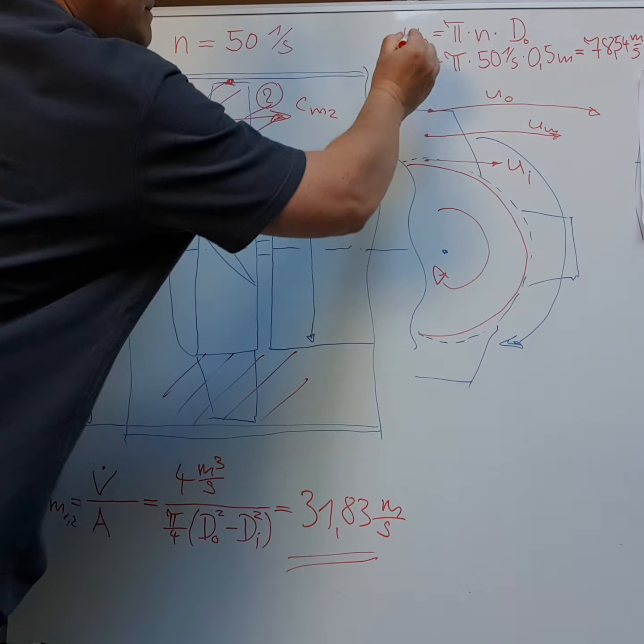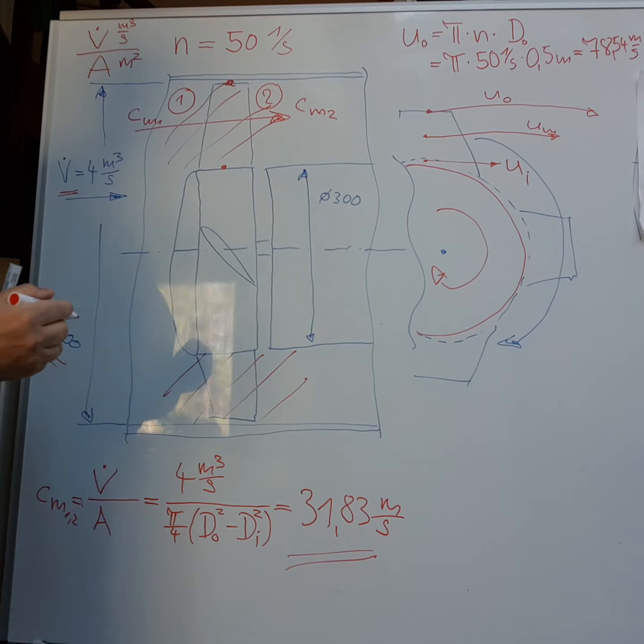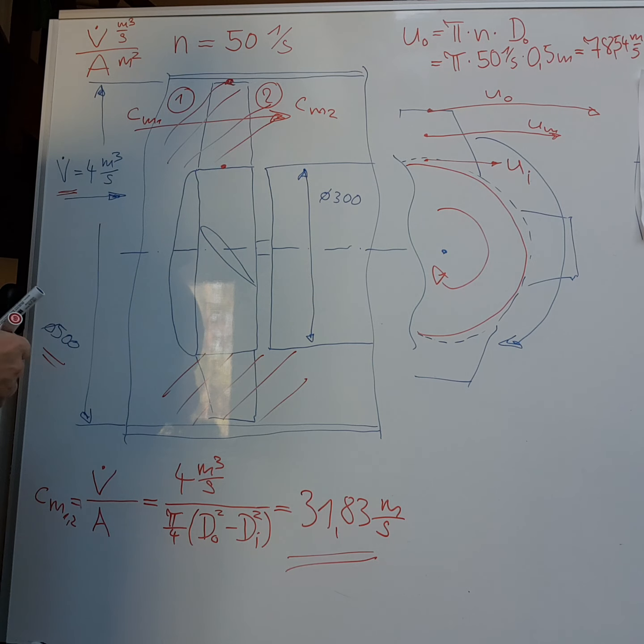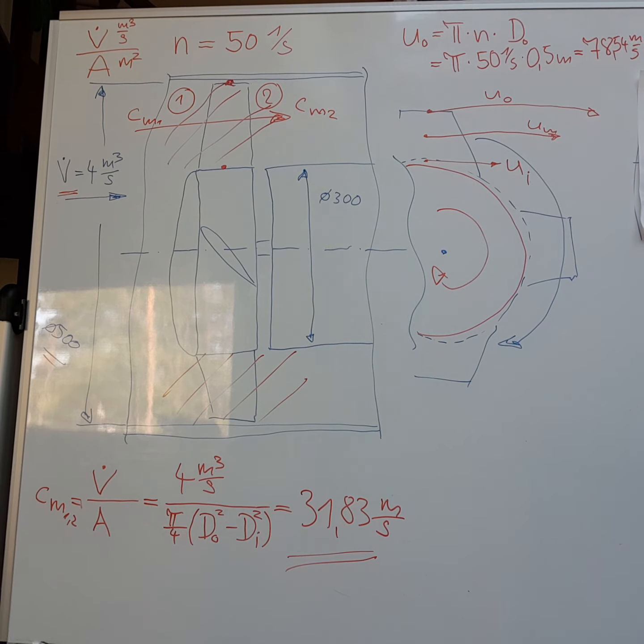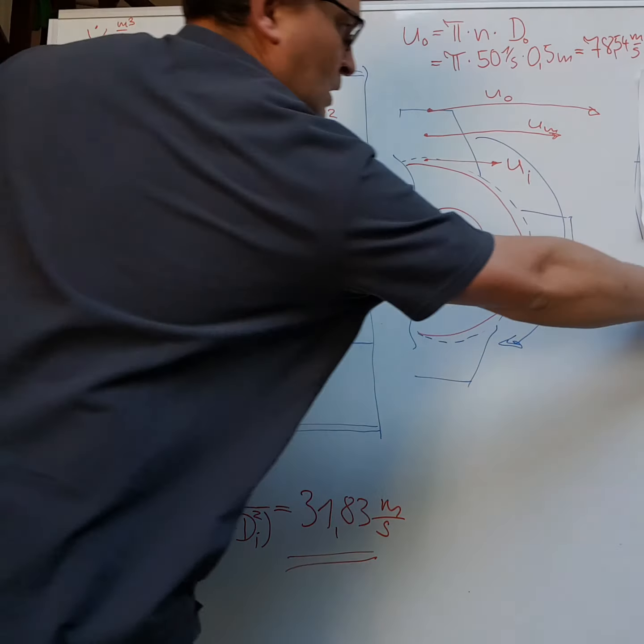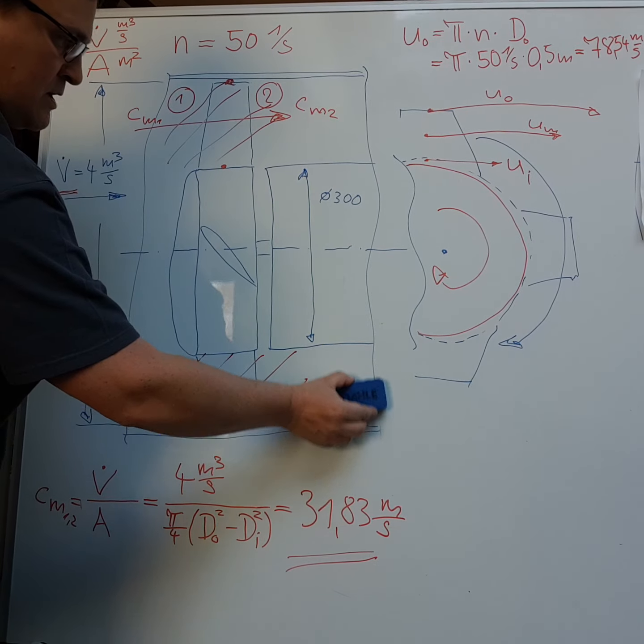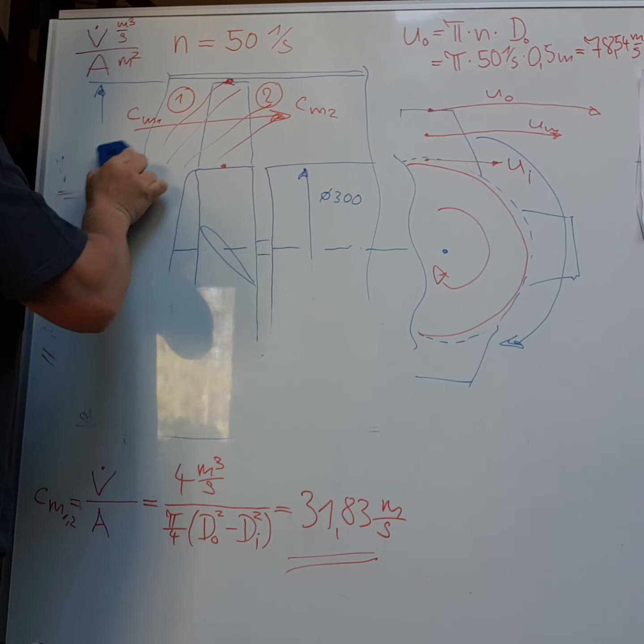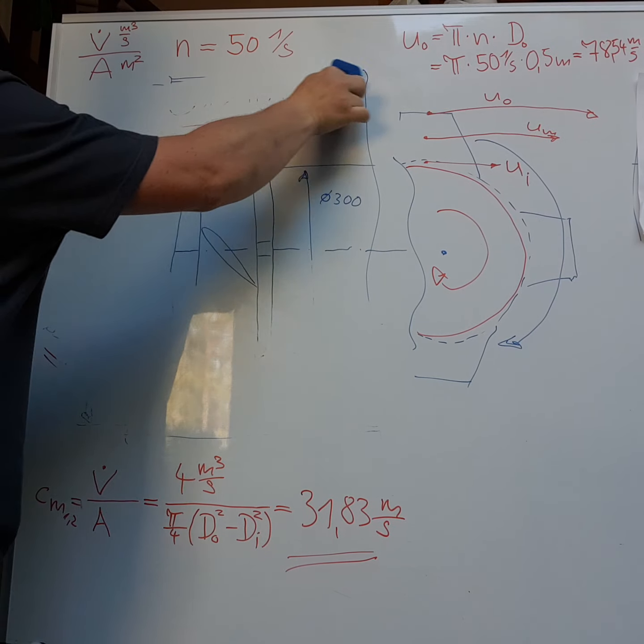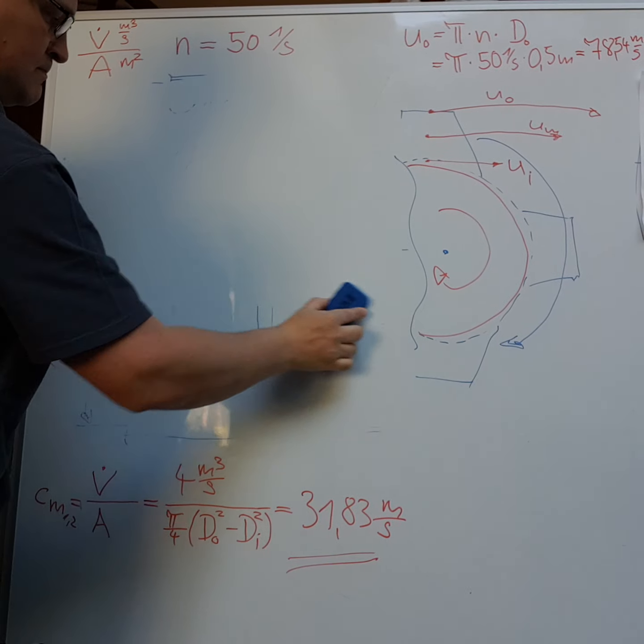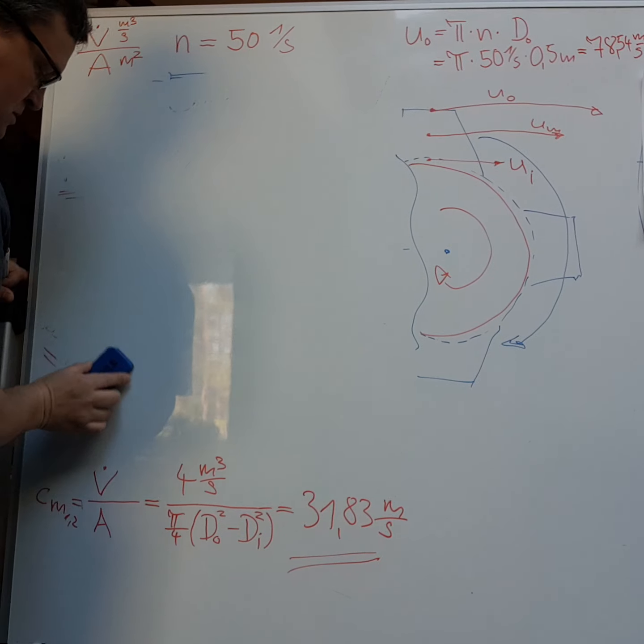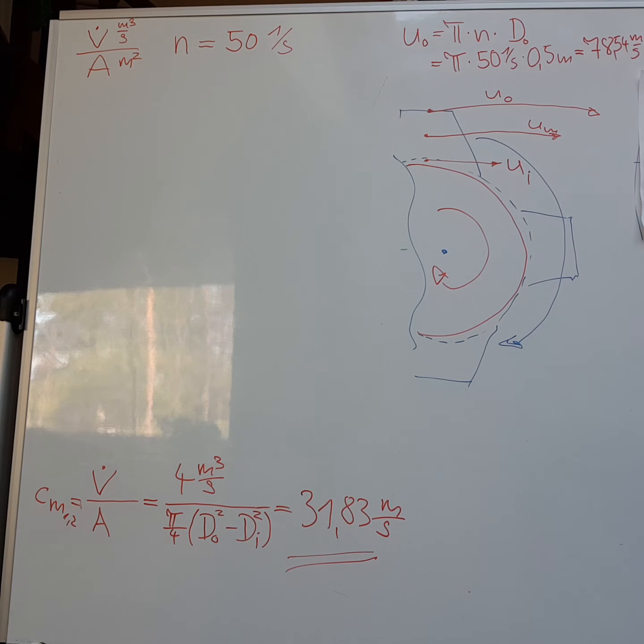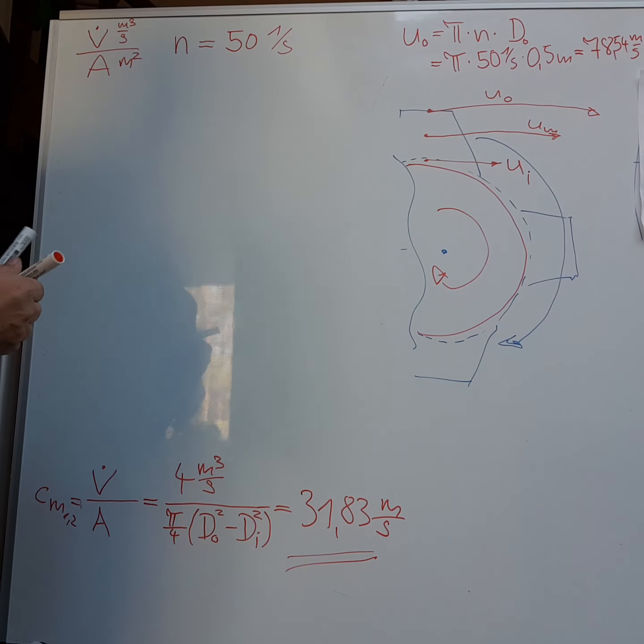And we have the velocity at the outer region. And now we want to paint the speed triangle. To do it, I need some more space. I will erase this picture. And now I paint our speed triangle.